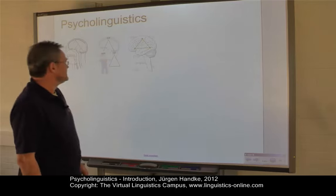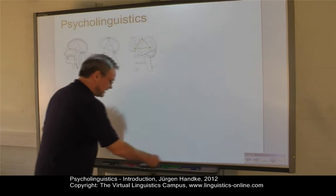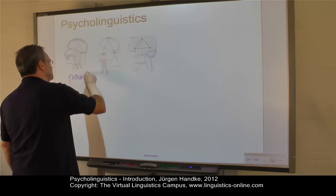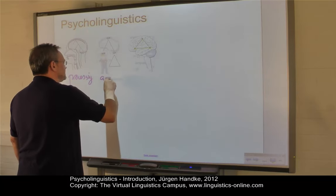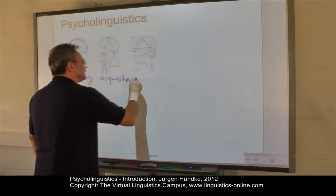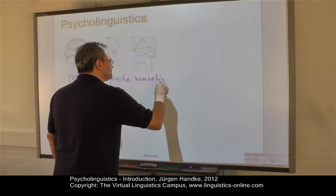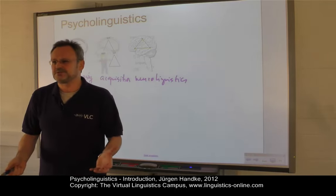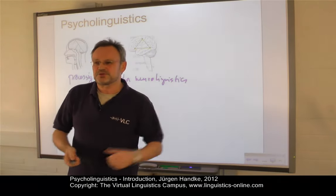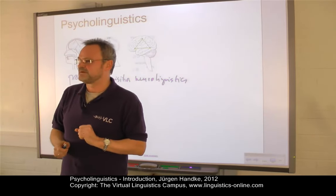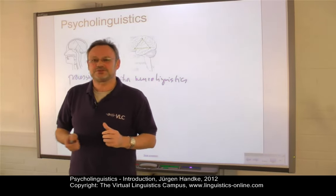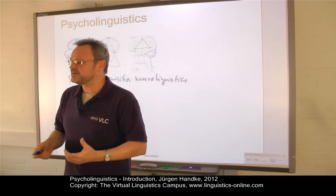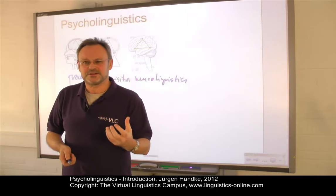Let's summarize this. Psycholinguistics with its three main branches — language processing, language acquisition, and neurolinguistics — is an extremely complex field. You have to apply the entirety of linguistic knowledge from phonetics to pragmatics. But we will try and tackle this field in our virtual linguistics campus class, Psycholinguistics, with numerous animations and simulations, in order to make the complexity of this field clear to all of you.